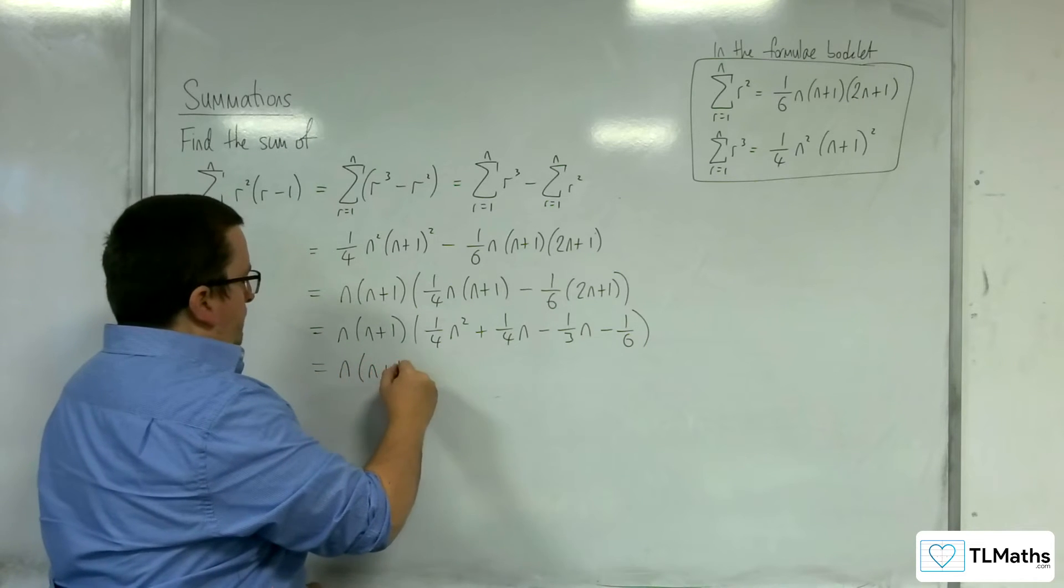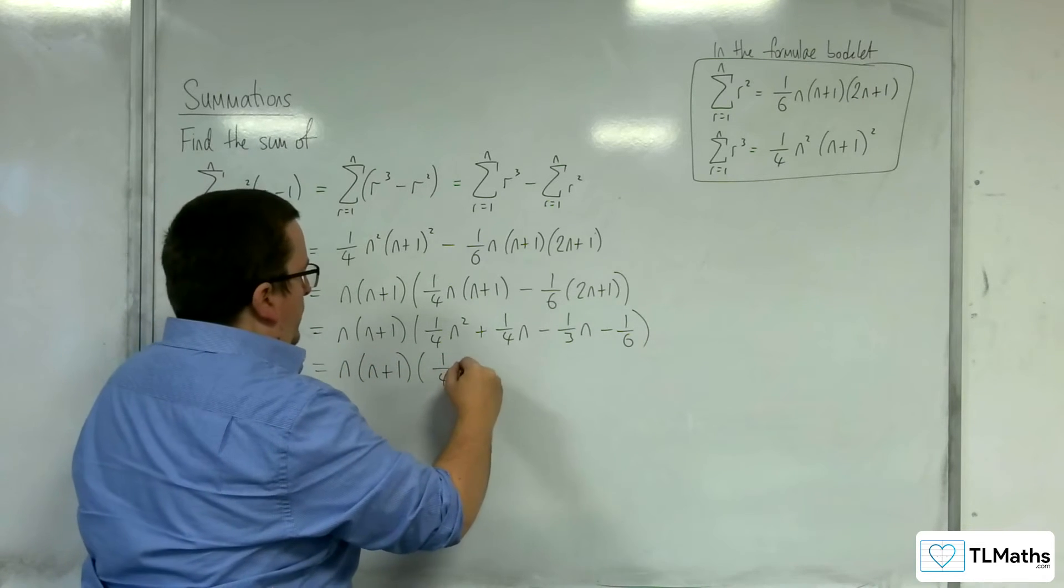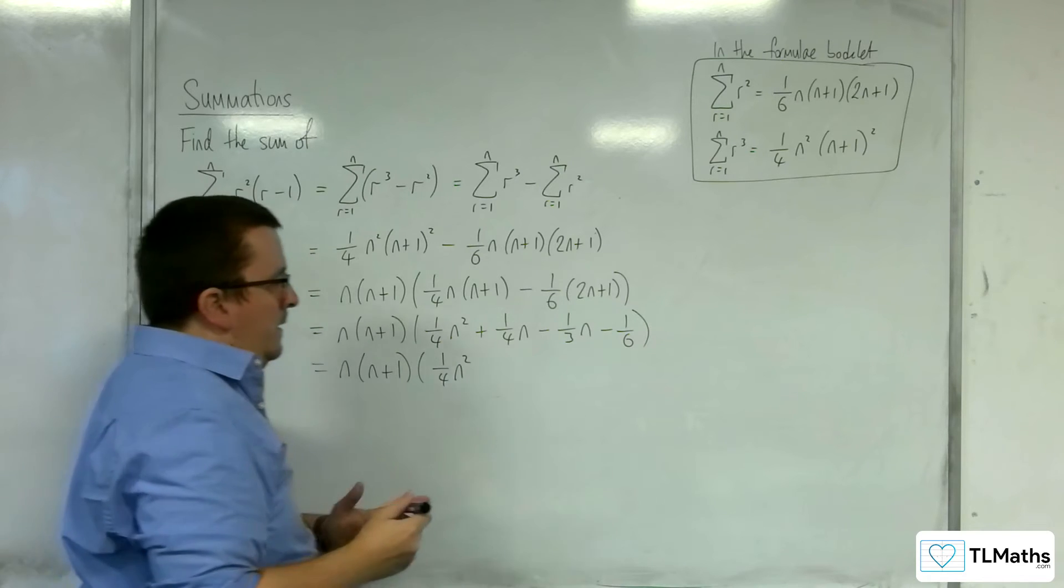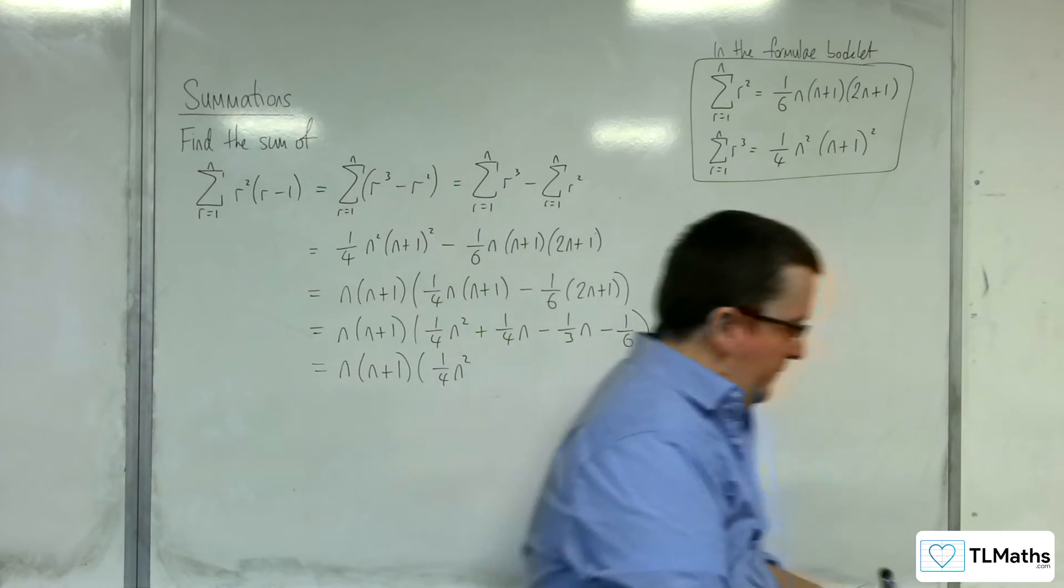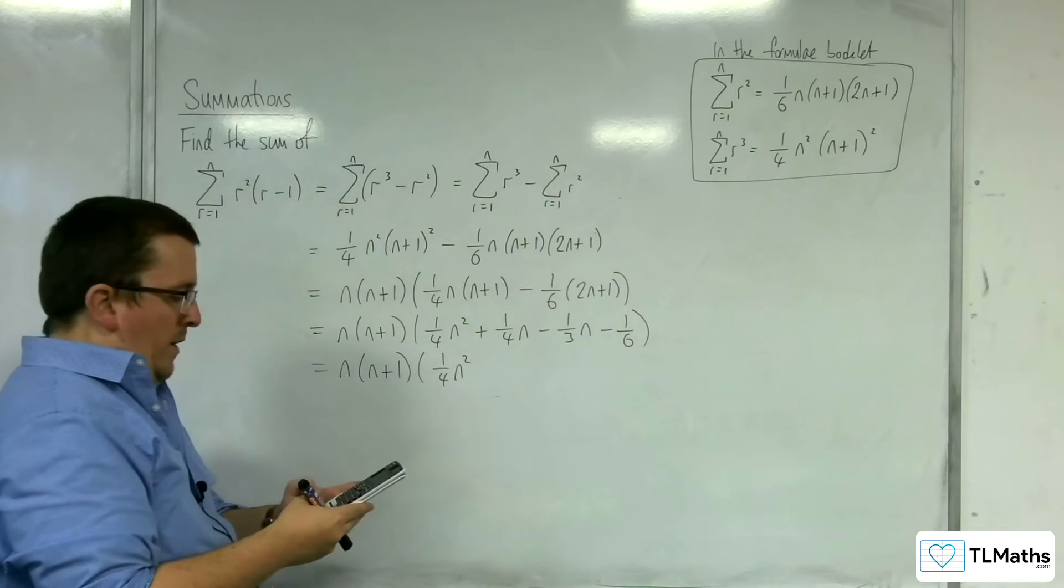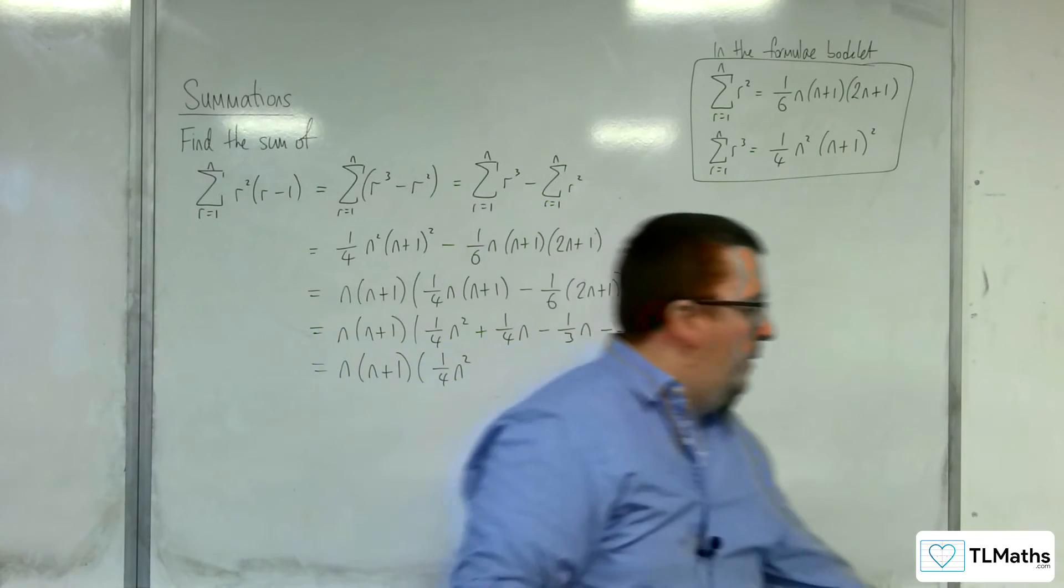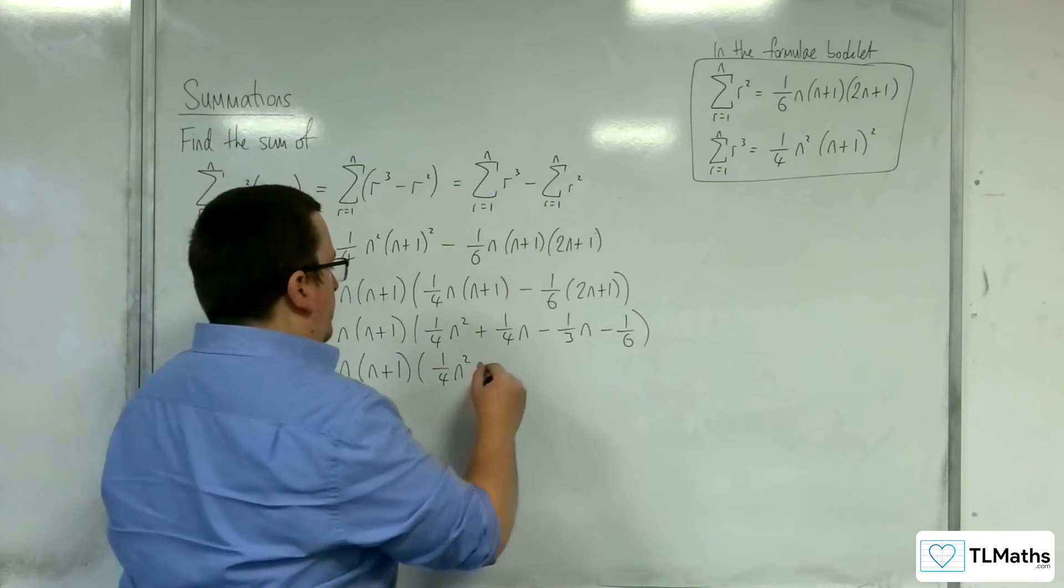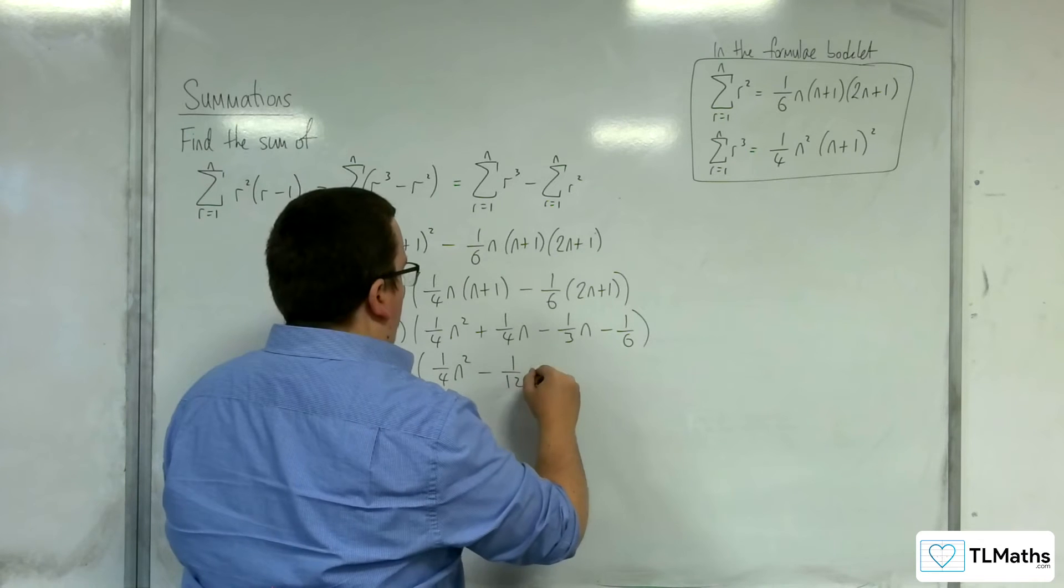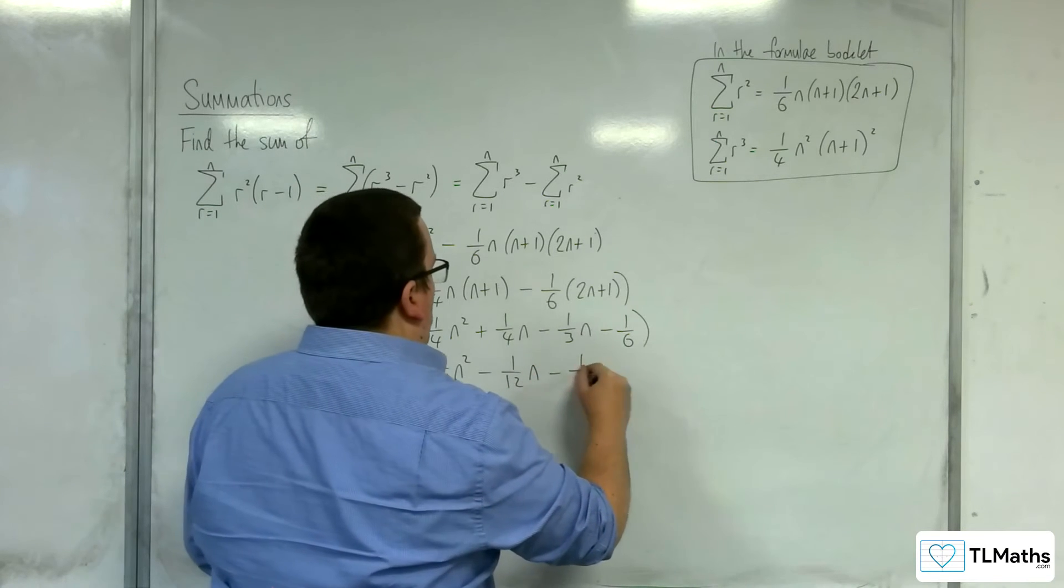OK. So, we've got the 1 quarter n squared. Then we've got the 1 quarter. Take away 1 third. So, take away 1 twelfth n. Take away 1 sixth.